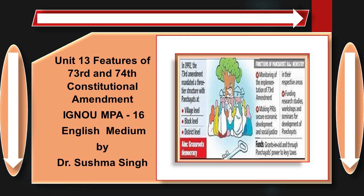In the wake of economic reforms initiated by the Narasimha Rao-led Congress ministry in the early nineties, the need for democratic decentralized planning was once again realized. This realization led to the passage of the much talked-about constitutional amendment acts, which were regarded as milestones of decentralized governance and decentralized planning.